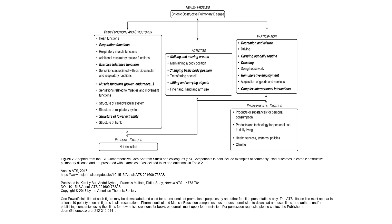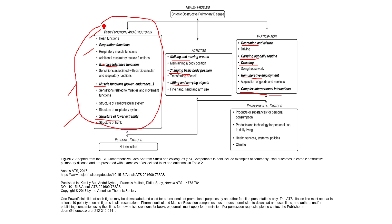Looking at the COPD model — which applies similarly to IPF and other pulmonary diseases — COPD affects heart function, respiratory function, exercise tolerance, and muscle function, particularly the lower extremities. The quadriceps become very weak if you're not moving around, which impacts activities like walking, changing body positions, lifting, and carrying objects. This in turn impacts participation in leisure activities, daily routines, dressing, employment, and social relations — it's hard to stay socially engaged if you can't move around well.